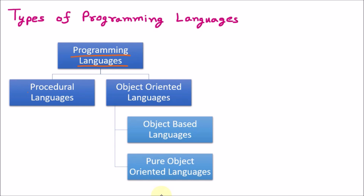The first category is the procedural language. In procedural language, we have to write procedures — sets of instructions. These are very bulky programs with no relation to real-life concepts; we are just making programs and working with them. The best example of a procedural language is the C programming language.